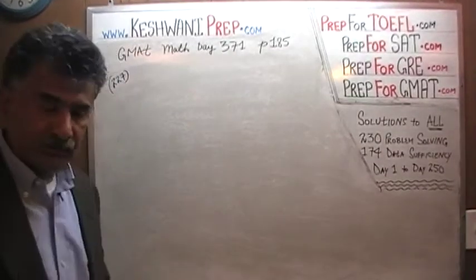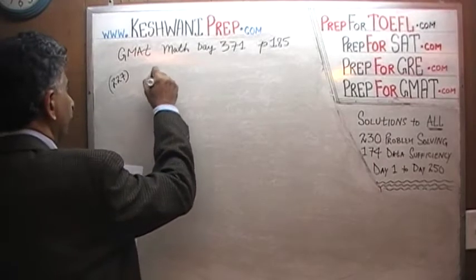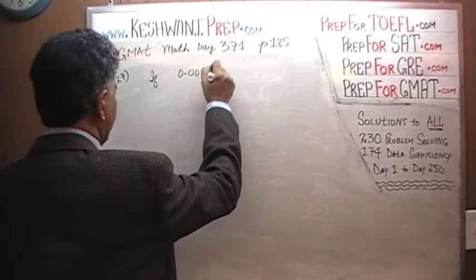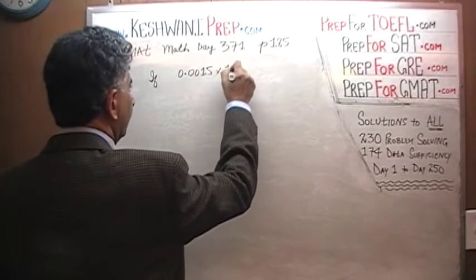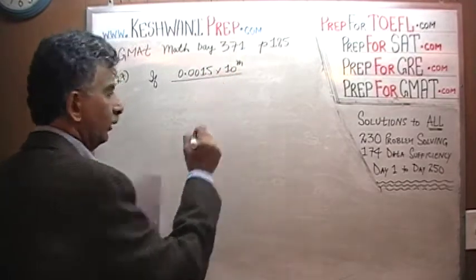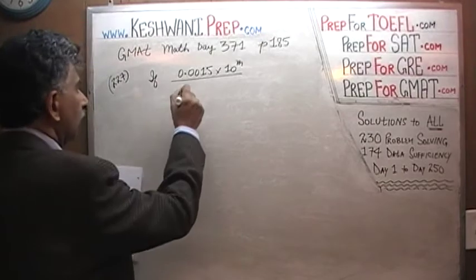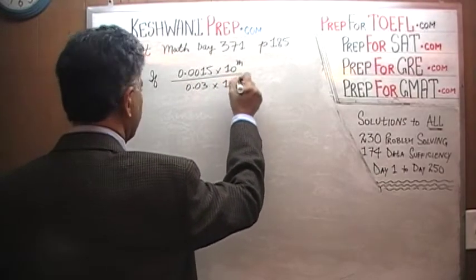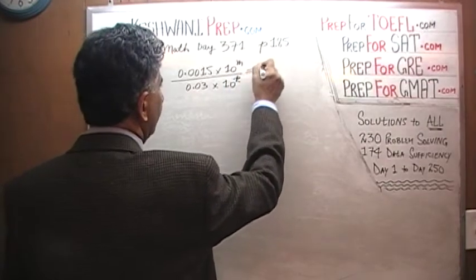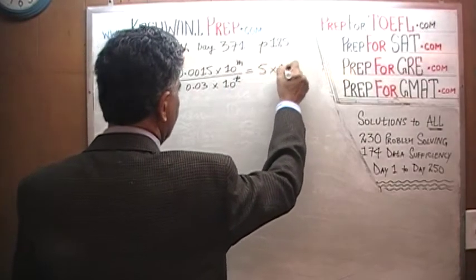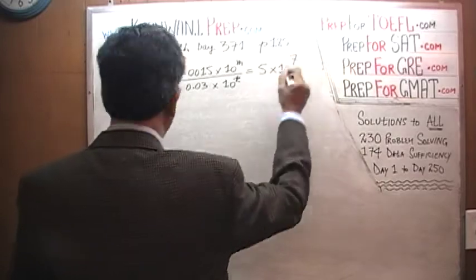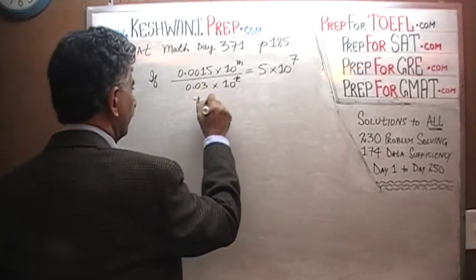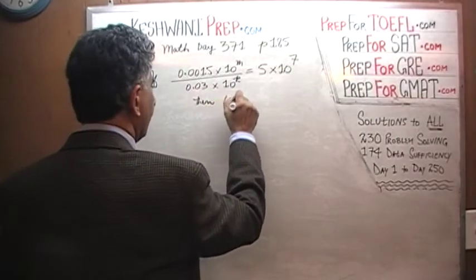Number 227 tells us that if 0.0015 times 10 raised to M, over 0.03 times 10 raised to K, equals 5 times 10 raised to 7, what is the value of M minus K?